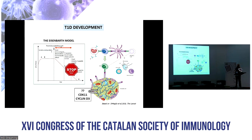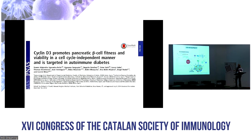Why did we pick up these two genes? Because at the end of disease progression, according to the Eisenbarth model, there is a honeymoon phase in which the individual has hyperglycemia but there is still some remnant insulin production, because some beta cell mass remains. In this phase, it has been described that beta cells enhance their proliferation to overcome autoimmunity, and regulatory T cells try to calm down the autoimmunity. We thought that CDK11 and cyclin D3, being related to cell cycle, would be good candidates as possible therapeutic targets. Cyclin D3 has already been described as very important for beta cell survival in a cell cycle-independent mechanism.